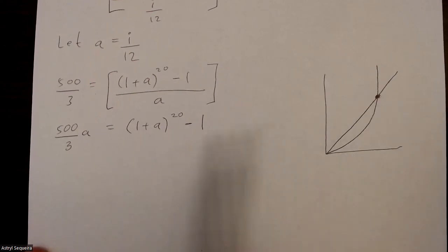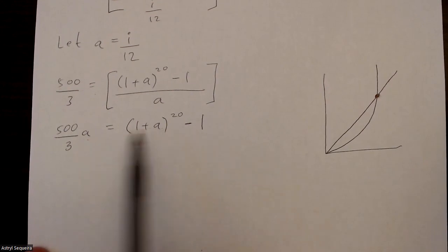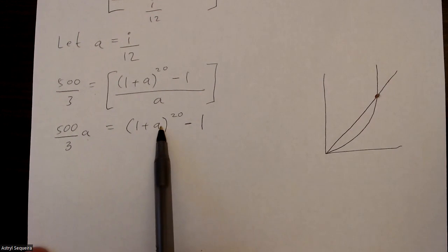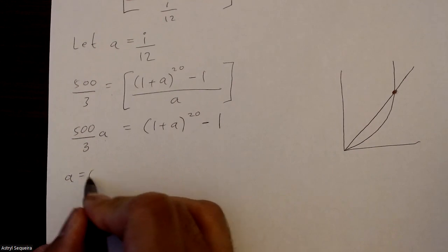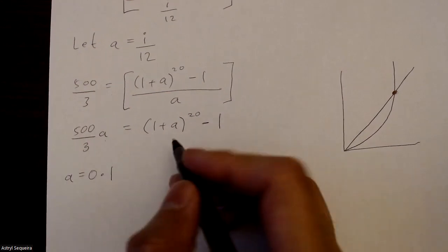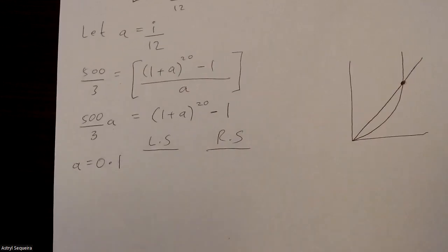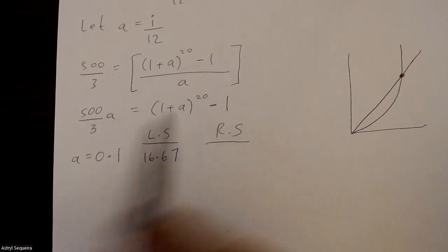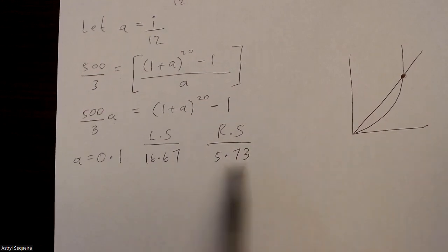Now, in order to find that, like I said, we're just going to have to do guess and check, because there's honestly no other way to do it. So we know that values of a have to be a decimal value, most probably to solve these questions. So I'm going to start with subbing a as 0.1. Let's see what I get. So on the left side, I have 500 over 3 times 0.1, and that's just 16.67. Let's sub it here on the right side. And I get 5.73. So they're pretty far apart.